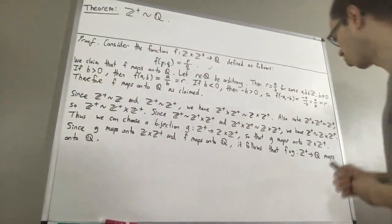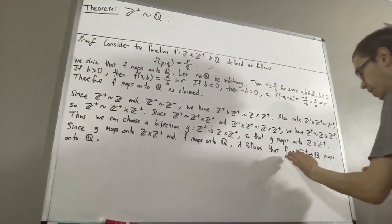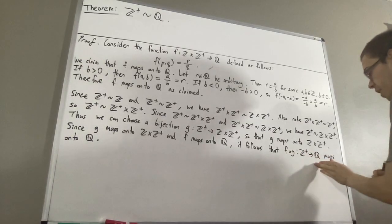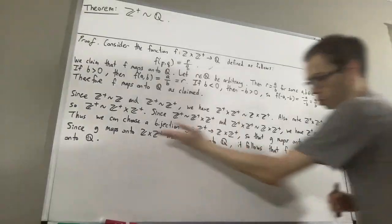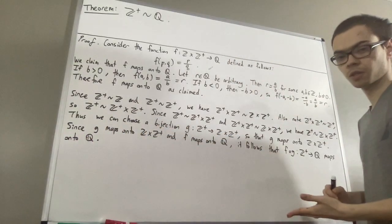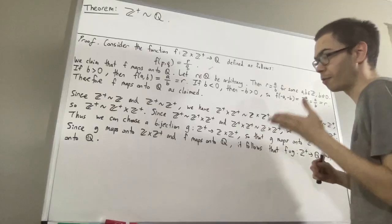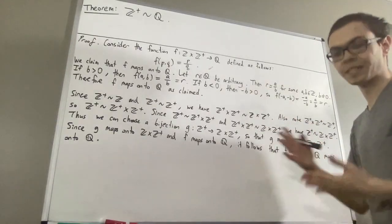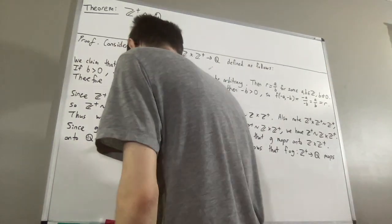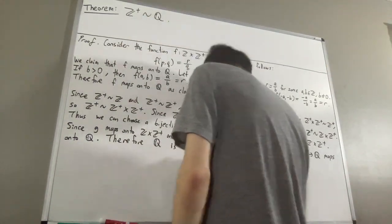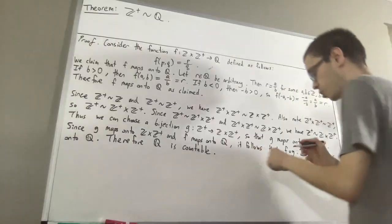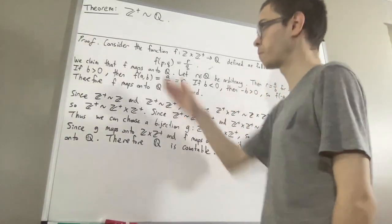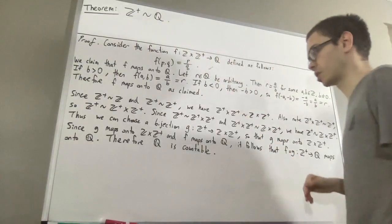We have shown there exists a function from ℤ⁺ to ℚ that maps onto ℚ. By the preliminary result for countable sets, this proves that the set of rational numbers is countable. More specifically, we are going to show there is a bijection from ℤ⁺ to ℚ.